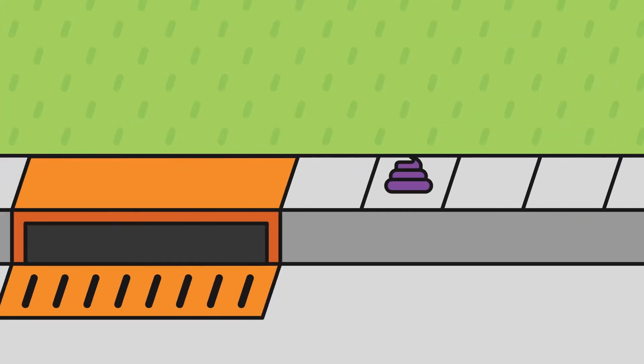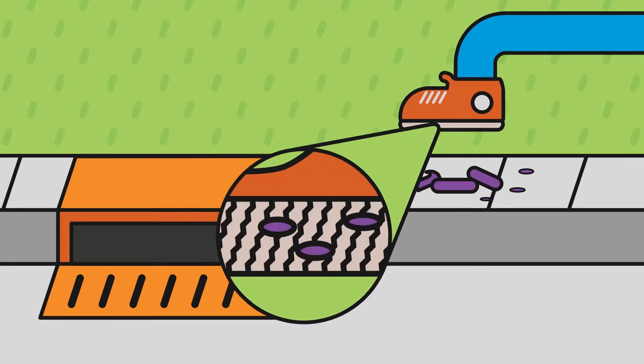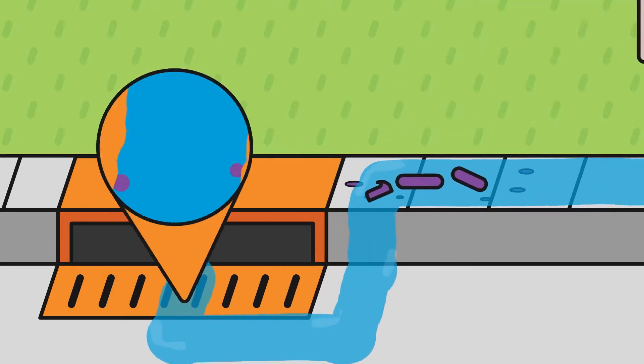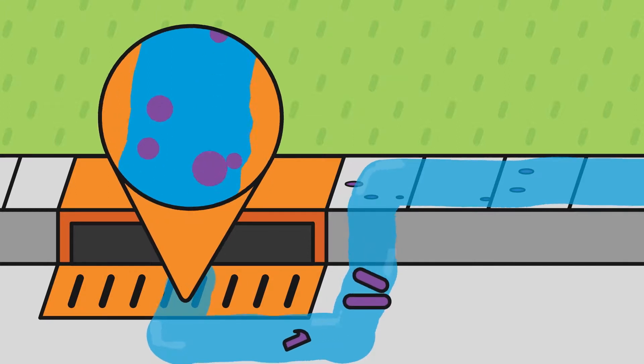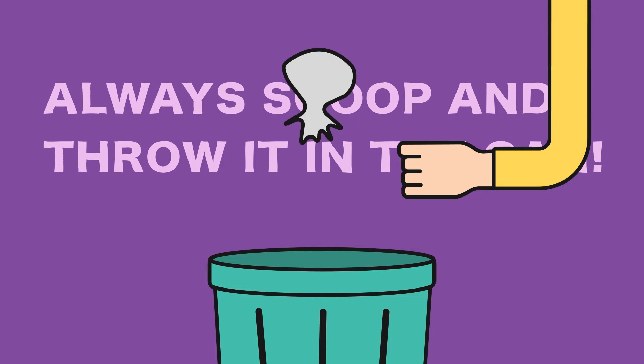Pet waste. Now, come on, nobody likes to step in poop. Pet waste can spread disease and contaminate our water sources. Never let your dog roam freely to use the bathroom, and always scoop your pooch's poop and throw it away in the garbage can.